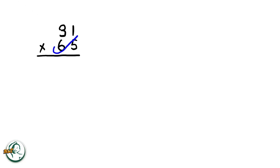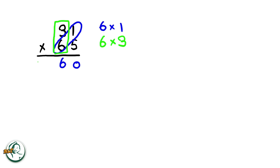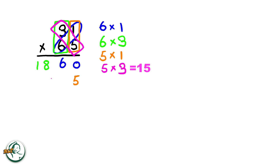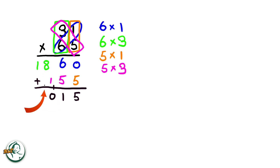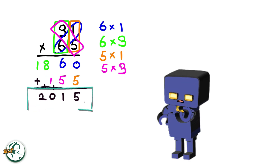Let's do another example: 31 times 65. Firstly, we start by writing down a 0. We multiply 6 by 1, giving us 6. Next, we multiply 6 by 3, resulting in 18. Moving on to the other number, 5 multiplied by 1 equals 5. 5 multiplied by 3 is 15. Now, we add these two sets of products. Adding 0 and 5 gives us 5. 6 plus 5 is 11. We write down 1 and carry over the 1. And 8 plus 1 plus the carried over 1 is 2. Therefore, the product of 31 and 65 is 2015.